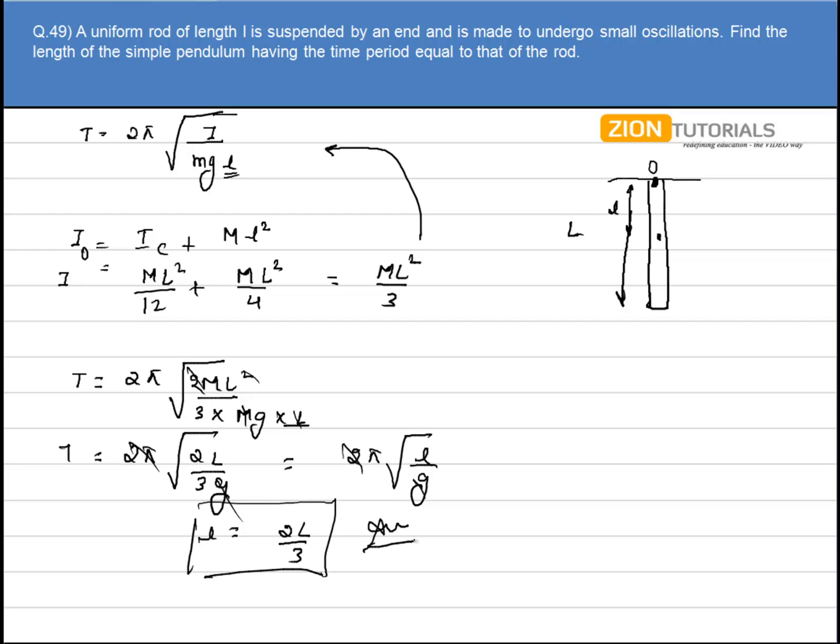This is my answer. The answer shows that 2L/3 should be the length of the simple pendulum so that it must have the same time period as that of the uniform rod of length L.